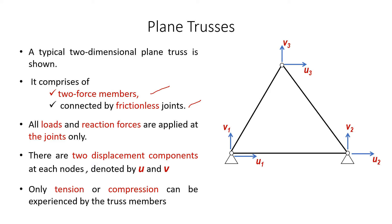As mentioned before, in the plane truss problem there are two displacement components at each node. We use the notation U and V, where U represents the displacement in the X direction and V represents the displacement in the Y direction. Moreover, only tension or compression can be experienced by the truss member.